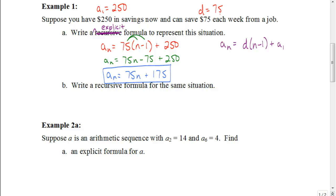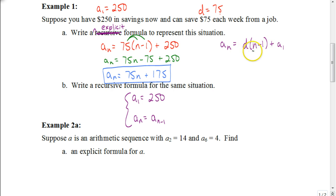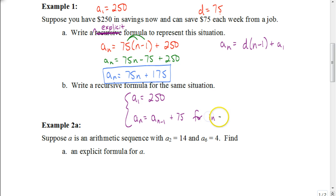For the recursive formula, we start by stating the first term, which is 250. Then: a-sub-n equals a-sub-(n minus 1) plus 75, where that (n minus 1) is a subscript meaning the previous term. So we take the previous term and add 75 each time. This formula is used for the second term onward — we already know the first term is 250. So we say this applies for integers where n is greater than or equal to 2.